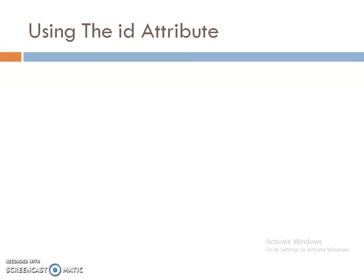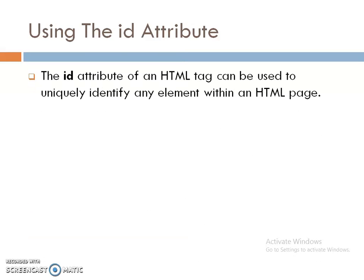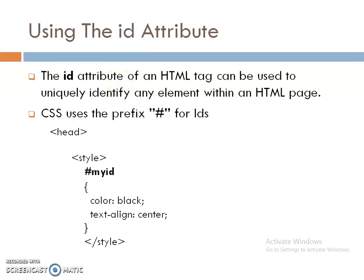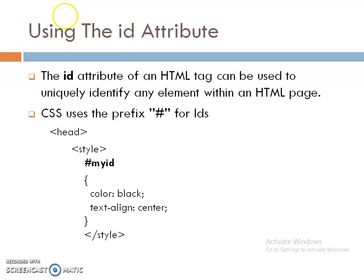Now we will see the use of the id attribute. The id attribute is used to uniquely identify any element within an HTML web page. For creating an id, we use a hash sign. The stylesheet is always created within the head tag using the style tag. So within the head tag, we create our stylesheet, and here I am using an id. For creating an id, we use the hash sign, followed by a user-defined id name, and then pass a number of CSS properties. Complete your style tag and head tag.